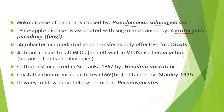Agrobacterium-mediated gene transfer is only effective for dicot plants. The antibiotic used to kill mycoplasma is tetracycline, because it acts on ribosomes. Coffee rust occurred in Sri Lanka in 1867, caused by Hemileia vastatrix.